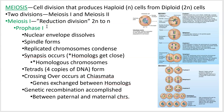Meiosis consists of two divisions, conveniently named meiosis I and meiosis II. Meiosis I is called the reduction division because you divide the number of chromosomes from the diploid state to the haploid state. There are phases, just like in mitosis, and they have the same names. Prophase I is prophase of meiosis I. It's kind of complicated, but the rest of the steps are simpler.